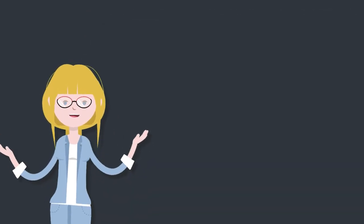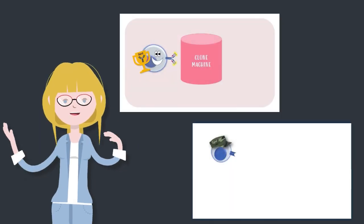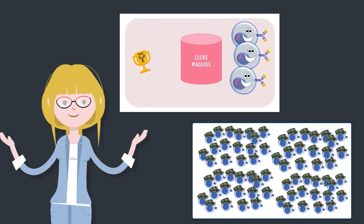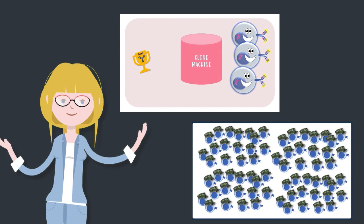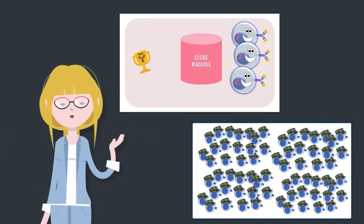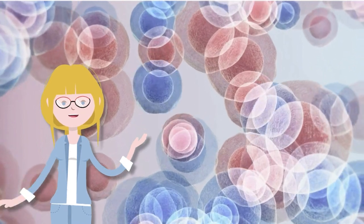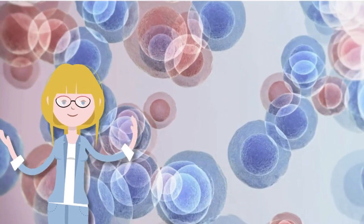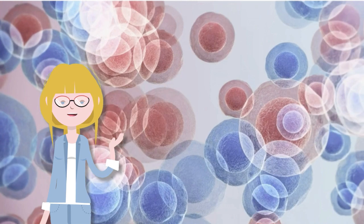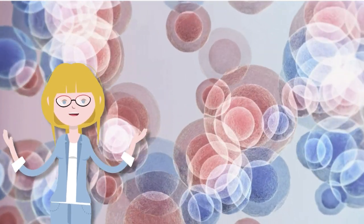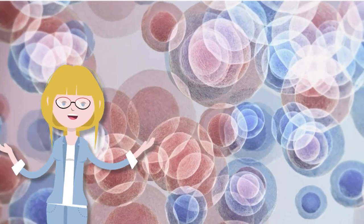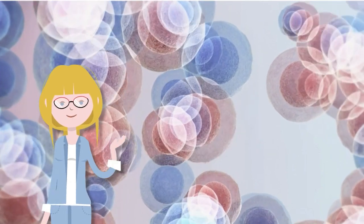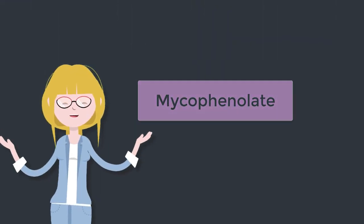In this immunology series we've covered B cells and T cells and how these proliferate during immune responses. Ultimately the immune response from B cells and T cells involves proliferation — cell division into armies of cells that will go forth to annihilate their target. These cells rely on their cell cycle and DNA synthesis to build clones of themselves and form their lymphocyte tribes. And this is where mycophenolate comes in.